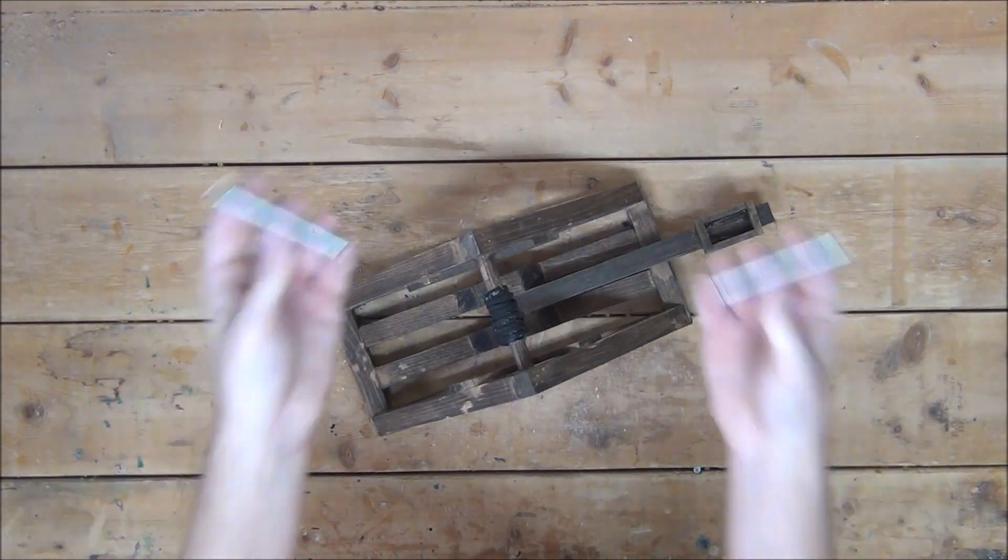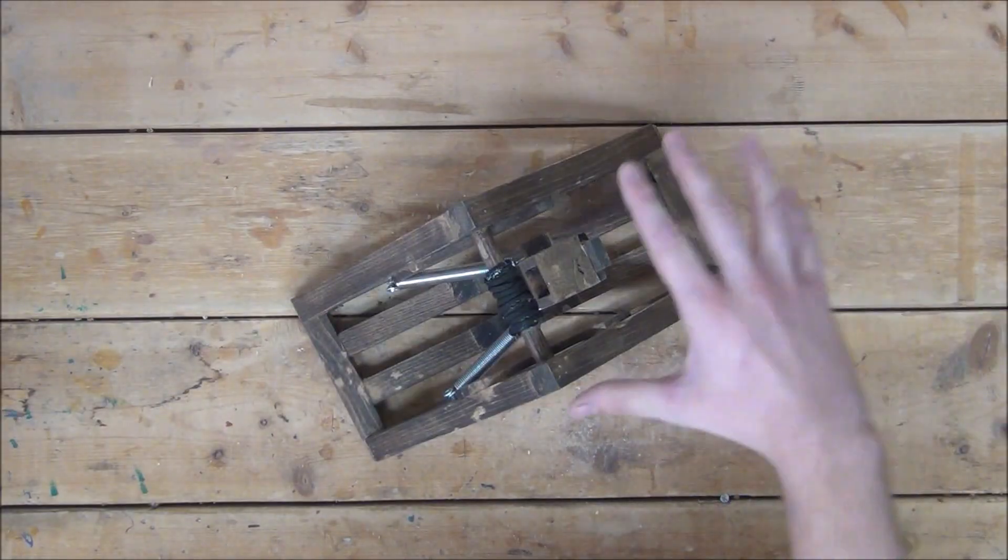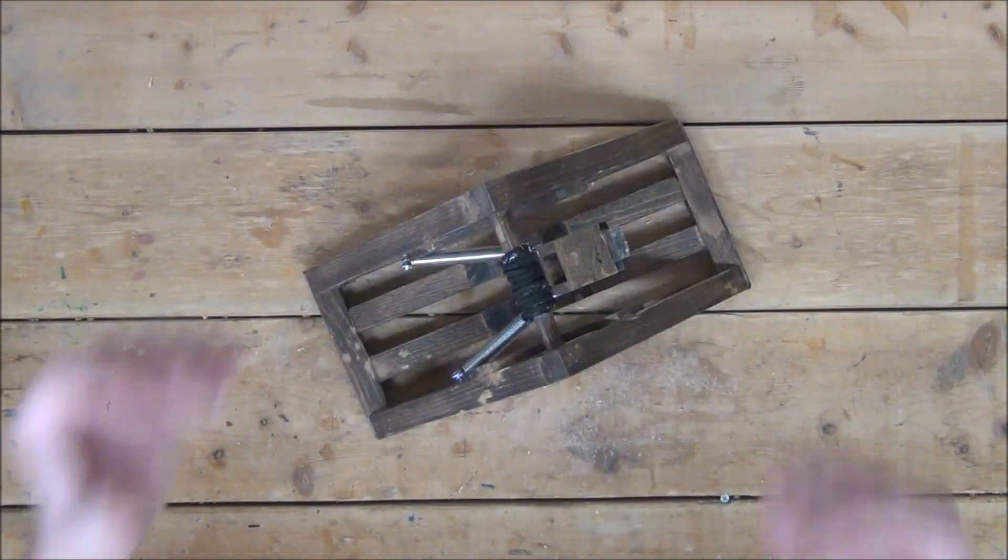Lastly, we can screw on our springs. And if you plan on using this inside, I would recommend putting some felt strips on the bottom. With that, your catapult is now complete and ready for action.